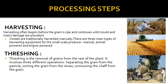The first step is harvesting. Harvesting often begins before the grain is ripe and continues until mold and insect damage become prevalent. Cereals are traditionally harvested manually. There are three main types of harvesting equipment for the small-scale producer: manual, animal-powered, and engine-powered. You can refer to these images to see how manual and engine-powered harvesting looks.